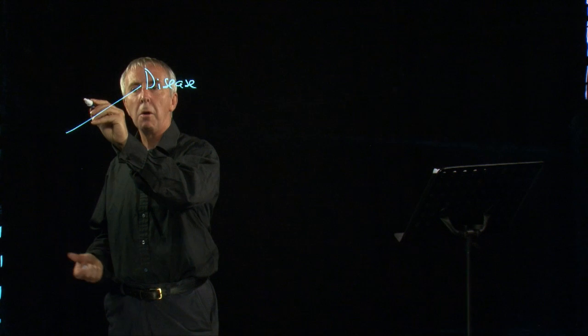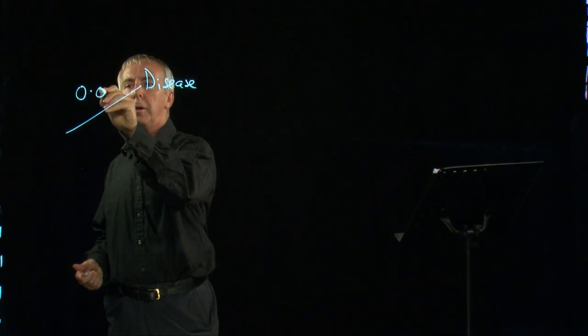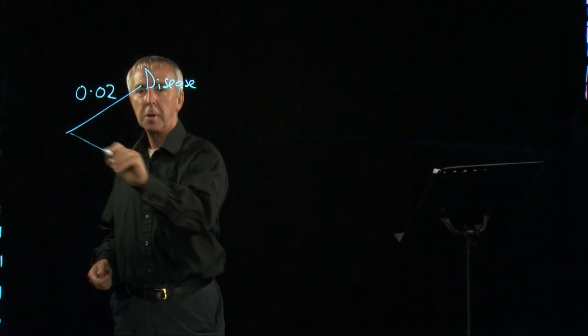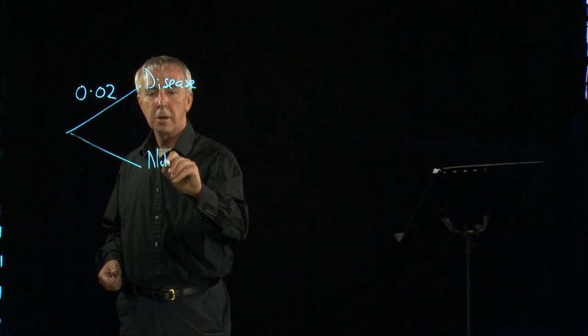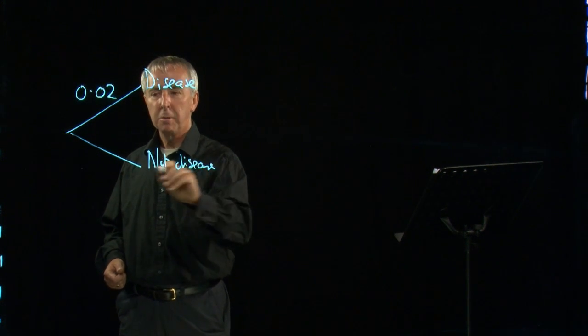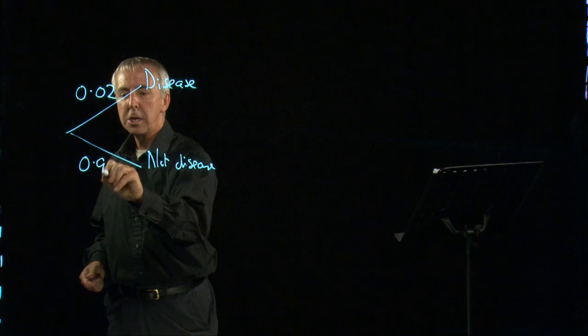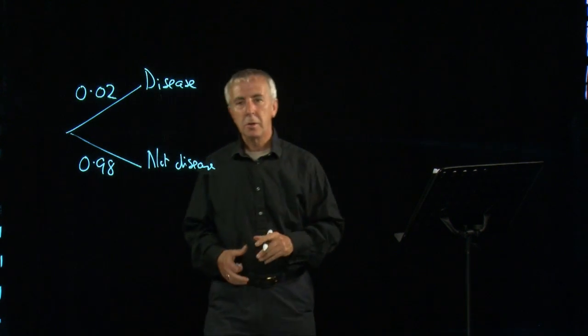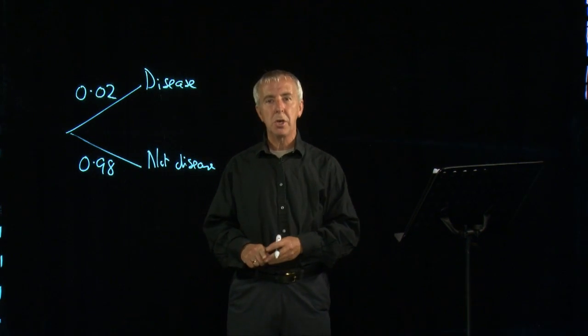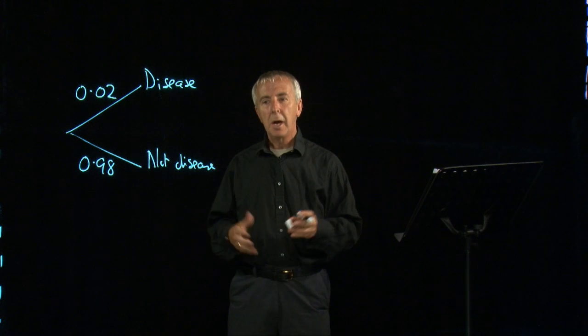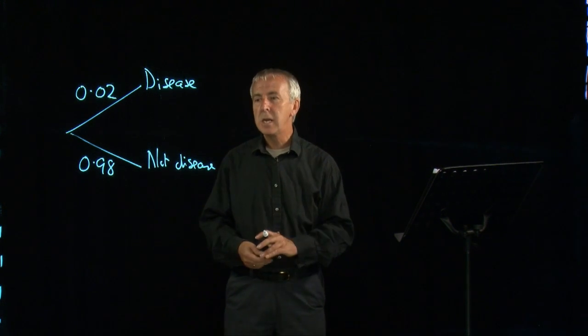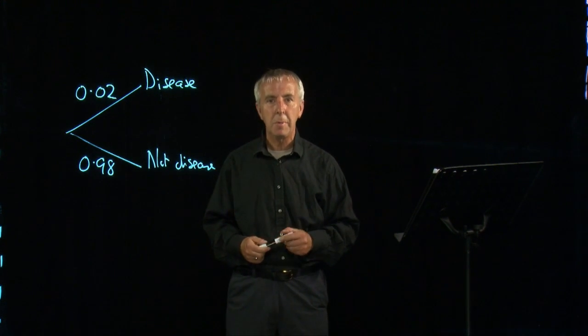Let's say it's very low, like most diseases are, say 2%. And then the rest of the population do not have the disease. So that will be 98%. This could be a particular medical condition. It could be pregnancy, HIV, or any particular test that you want to do for a medical condition.